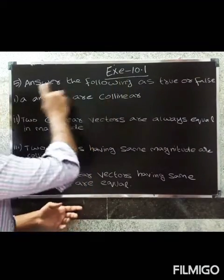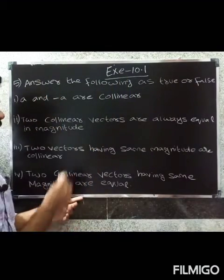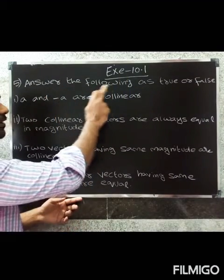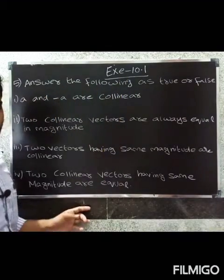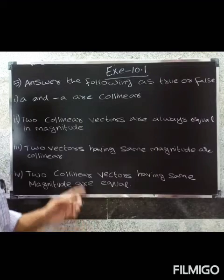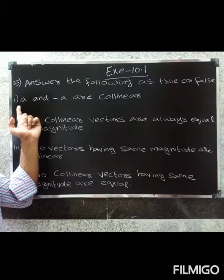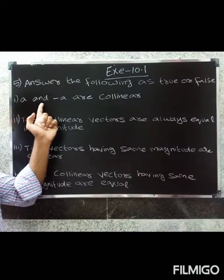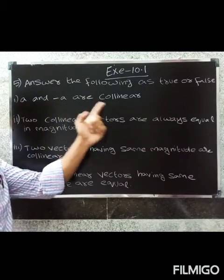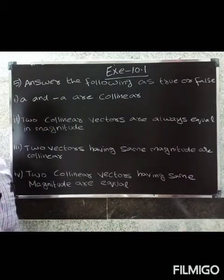Welcome friends. Exercise 10.1, question 5 — answer the following as true or false. First of all: a and minus a are collinear.